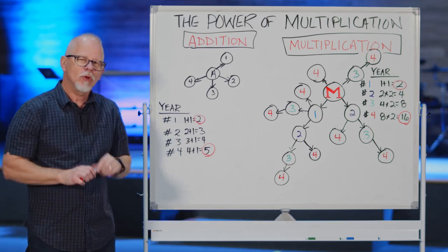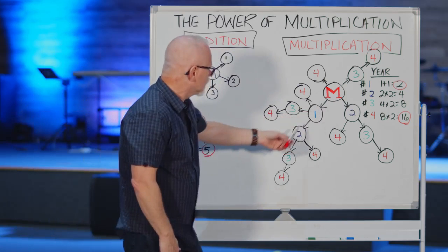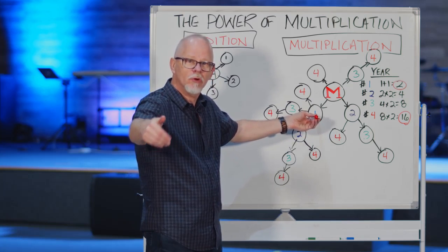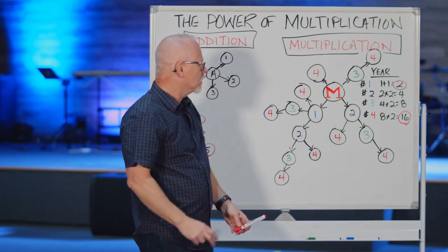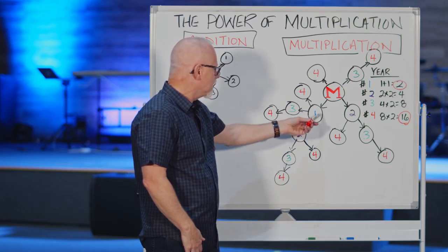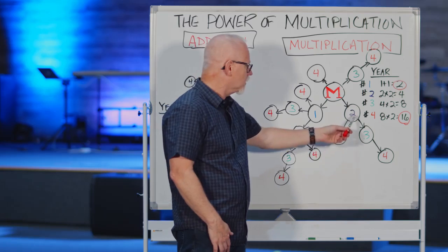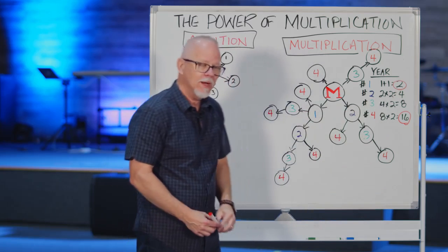But look at the multiplier. See the difference. The multiplier, he adds one the first year, but he disciples that person to also reach out and disciple others. So the first year, there's two just like here. But the second year, that disciple makes a disciple, and the original disciple maker, the multiplier, makes a disciple. So instead of three, you have four.